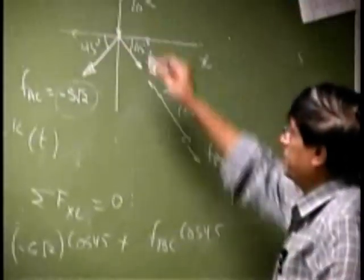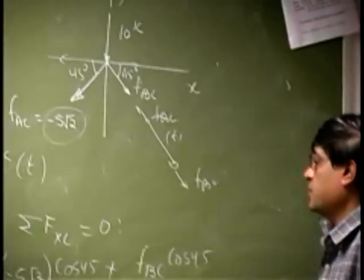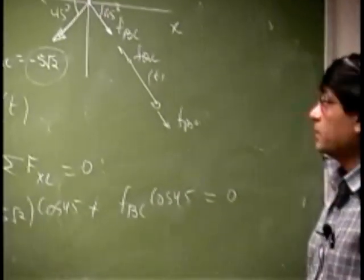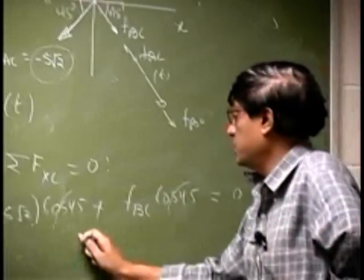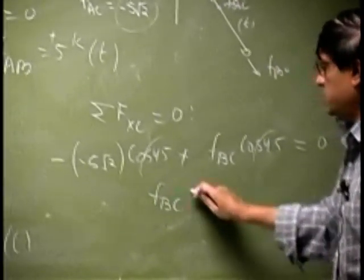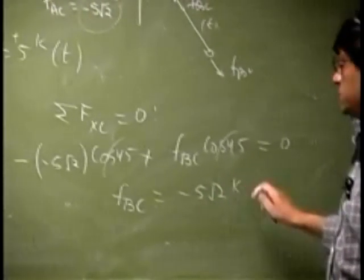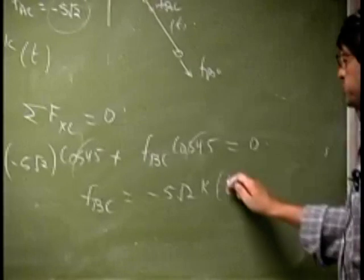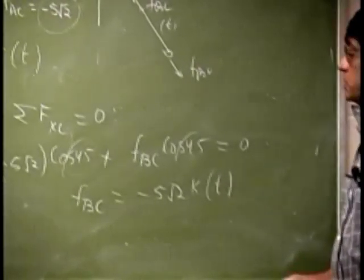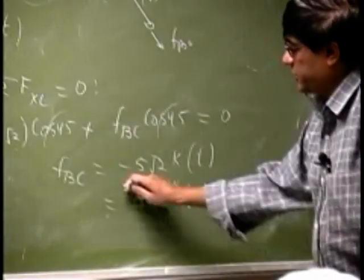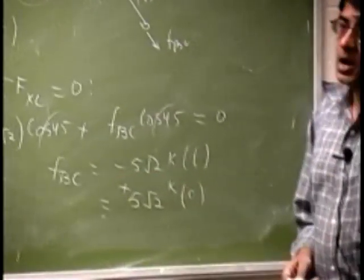Then you have plus FBC cosine 45. That is going this way, so that is positive. And this should be 0. So this cancels out and FBC comes out to be negative 5 root 2 kips with tension. So this is going to be 5 root 2 kips and really compression with positive.